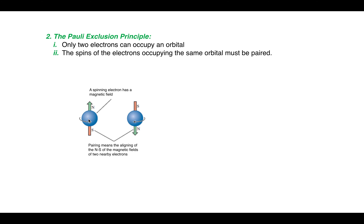An electron has two types of motions: one is the motion of the electron about the nucleus, just like the motion of the Earth around the Sun, and the second is the motion of the electron about its own axis. Because of this spin motion, the electron acts as a tiny magnet, so it has a north pole and a south pole.